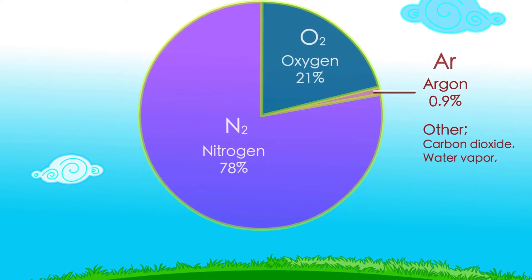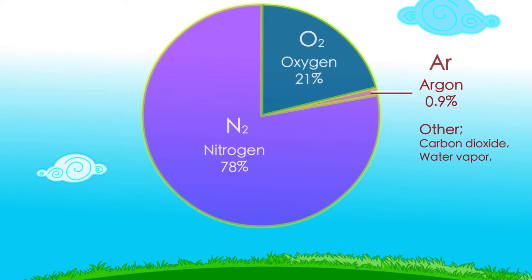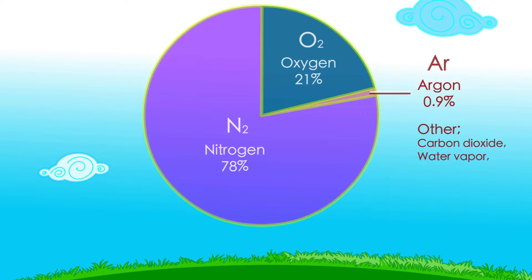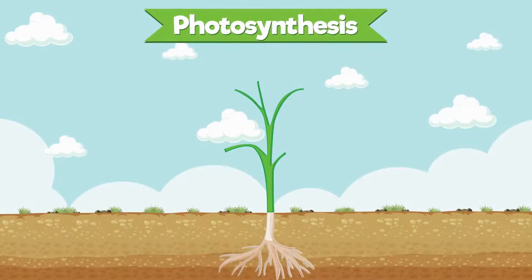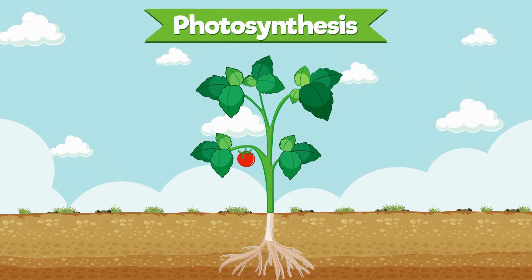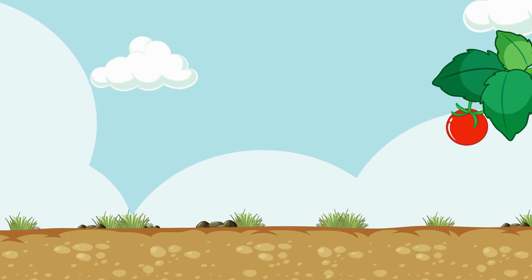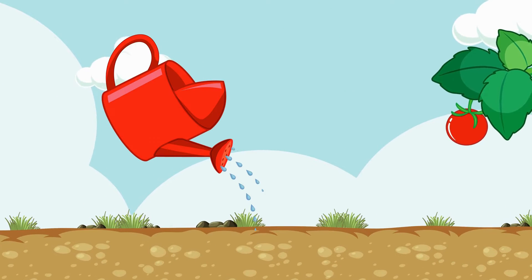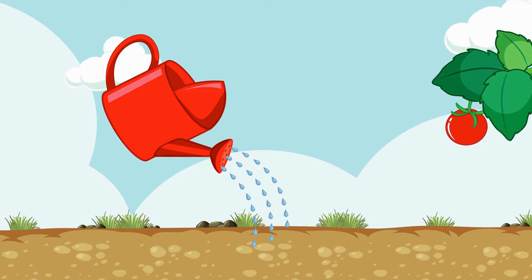Oxygen is a big part of air. We need oxygen to live — we breathe oxygen. Nitrogen is another gas in the air. It doesn't help us breathe, but it's beneficial for plants. Nitrogen helps plants grow and stay healthy.